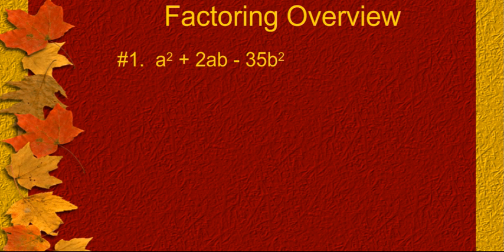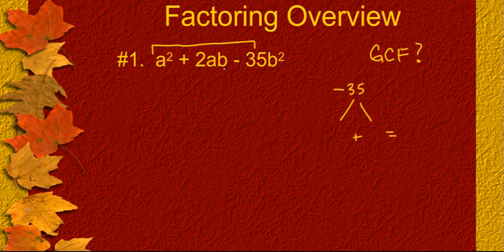Let's go ahead and take a look at this first example. The first thing you always need to do is check for a GCF. In this case, 1, 2, and 35 don't have anything in common, so we're looking at just a regular old trinomial. If we take a trinomial, we need to multiply a times c. So, we get 1 times negative 35, which gives me negative 35. I need factors of negative 35 that are going to add to this b term, which is 2.